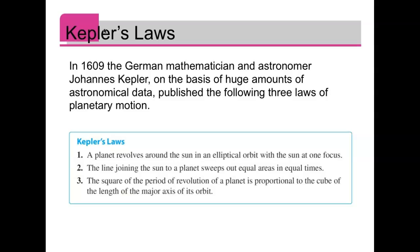Two, the line joining the sun to a planet sweeps out equal areas in equal times.